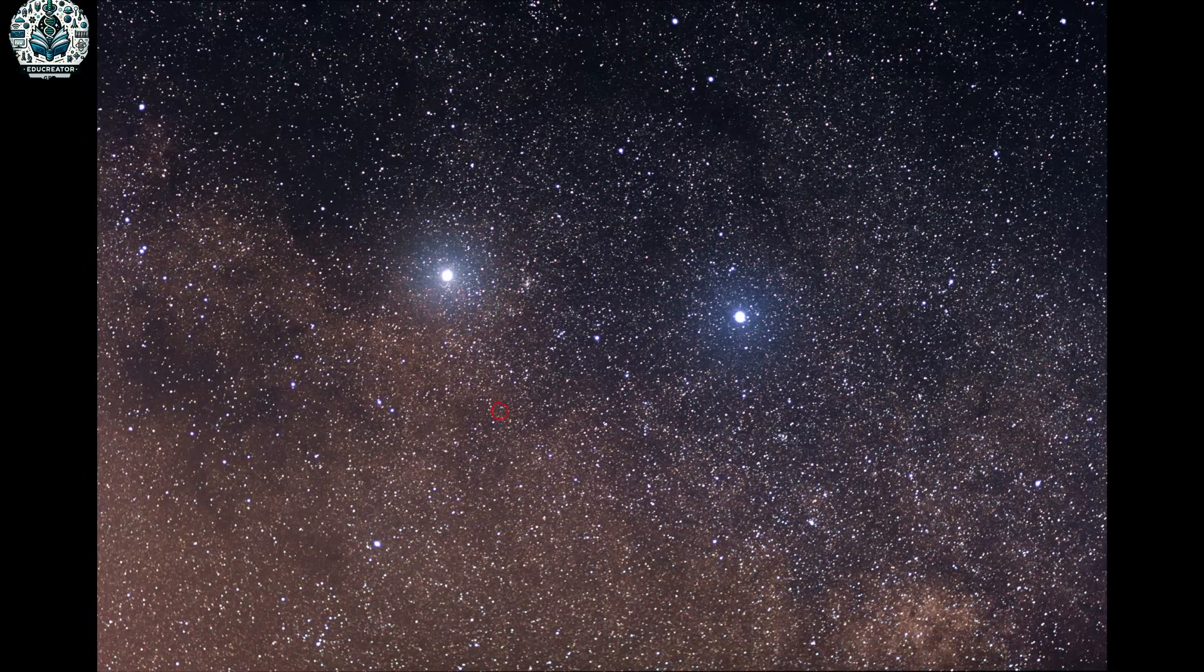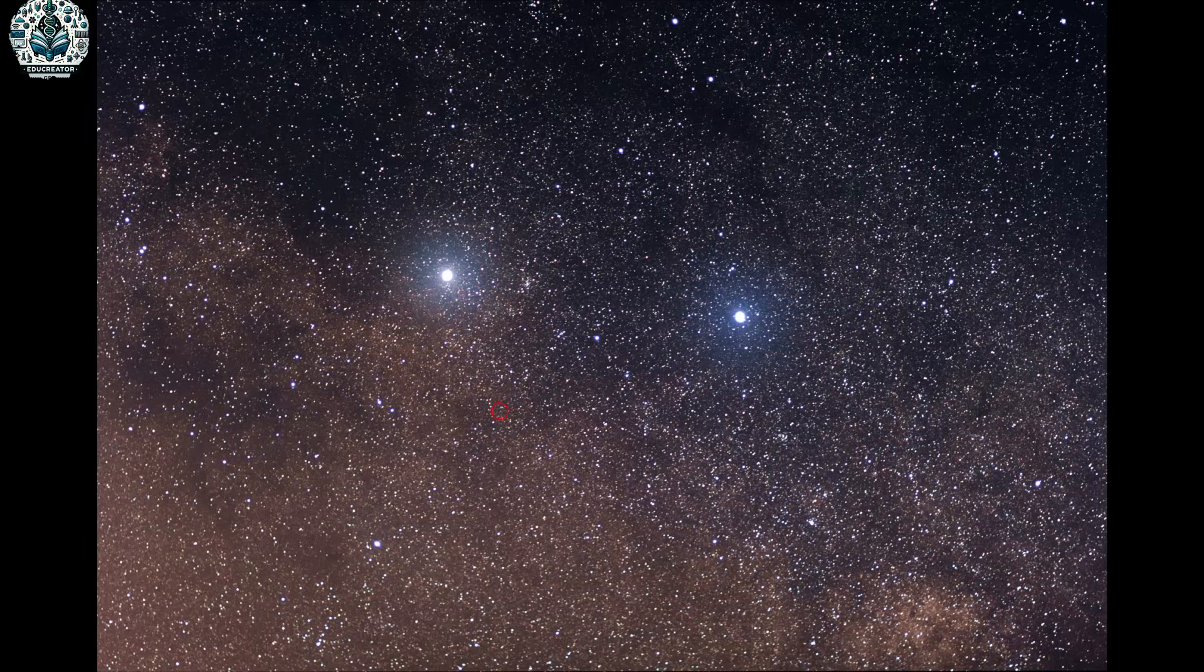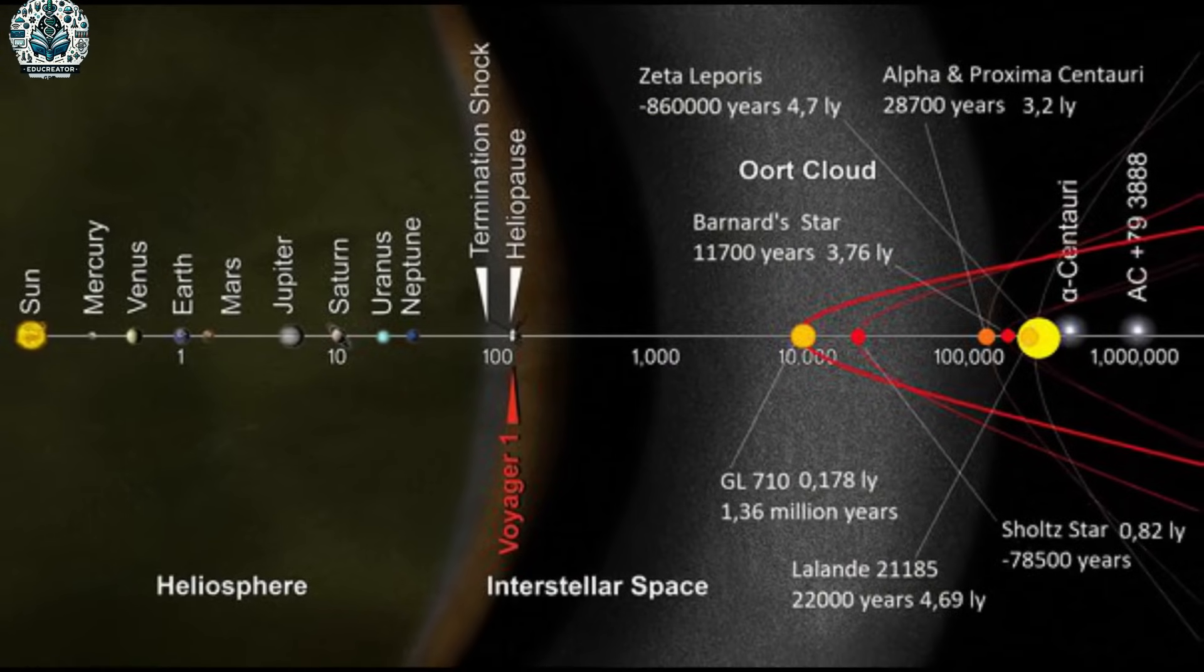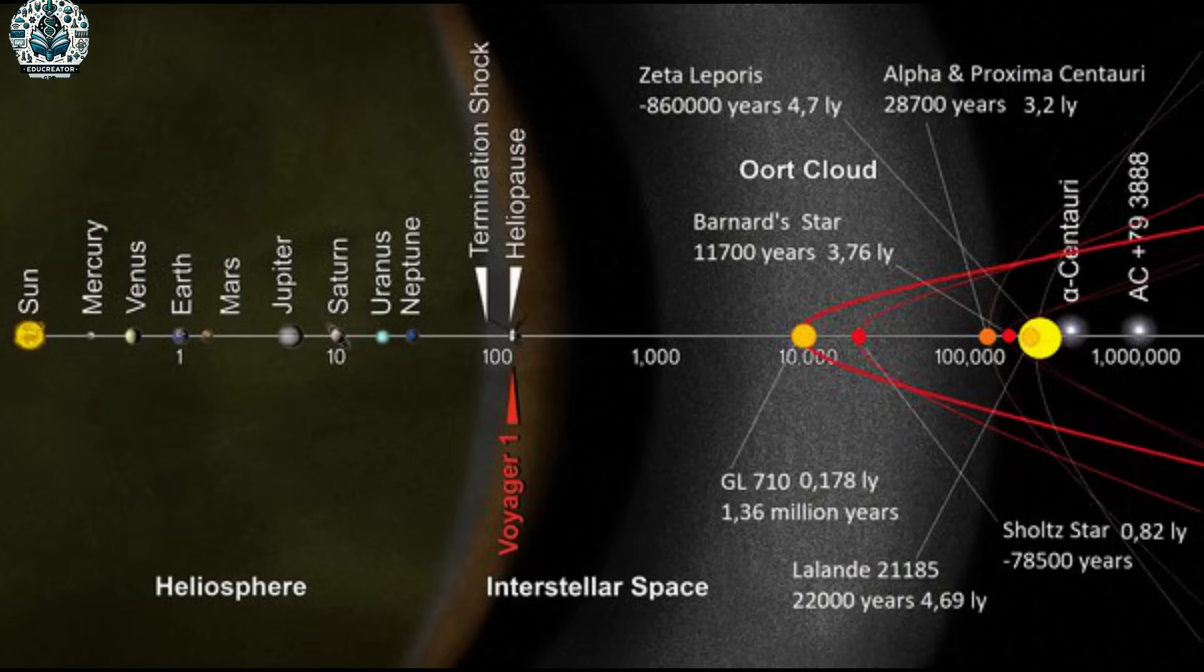Take for instance the nearest star to our solar system, Proxima Centauri. The light we see from the star is about 4.24 years old. It has traveled a distance of 4.24 light years to grace our night sky. In a sense, we are seeing Proxima Centauri not as it is today, but as it was over four years ago.